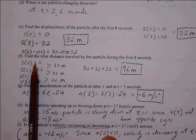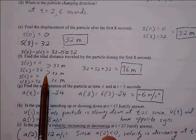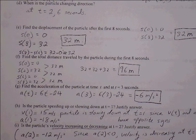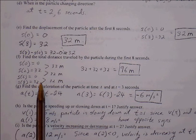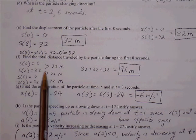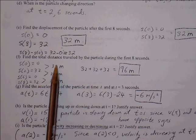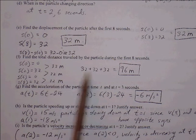At 2 seconds the particle starts going backwards, and at 6 seconds it stops and moves forward again. We must identify all moments where the particle changes direction and count those distances as positive values. The total distance is 32 plus 32 plus 32, which equals 96 meters.